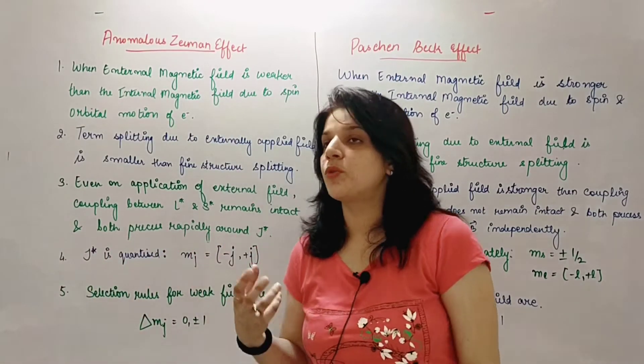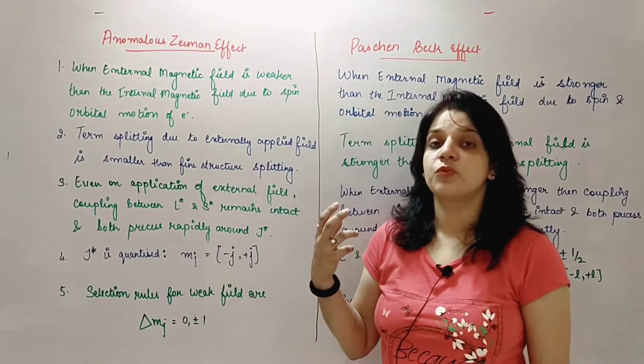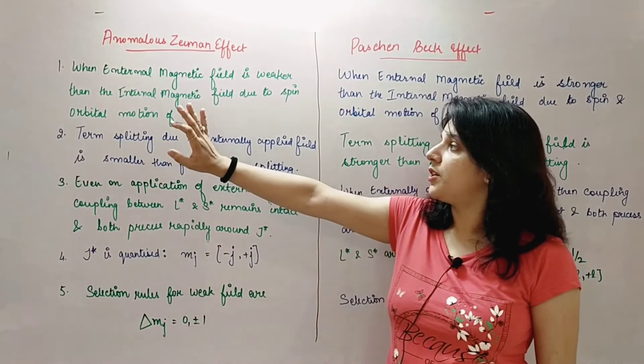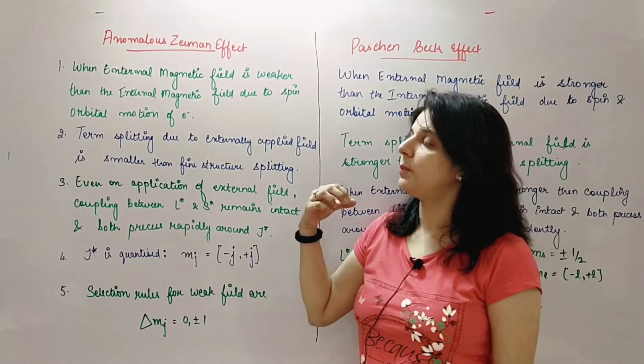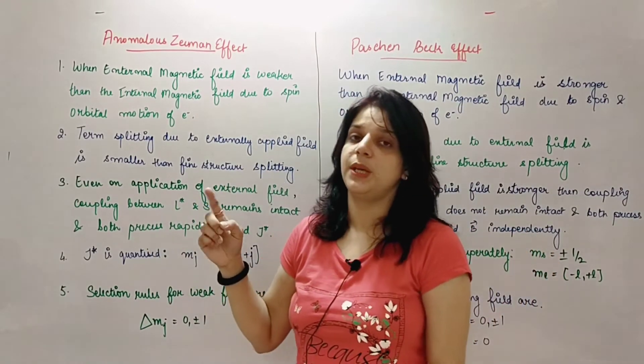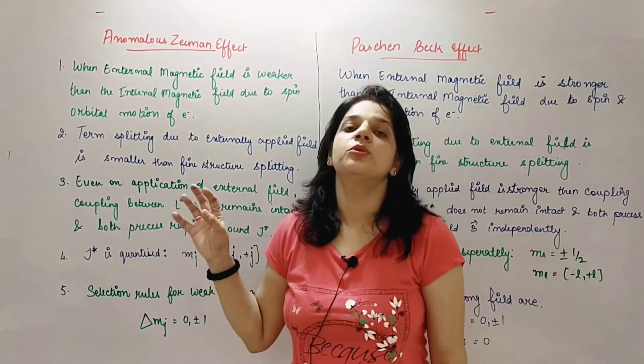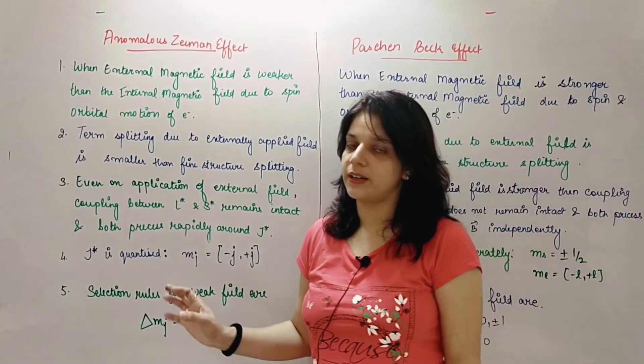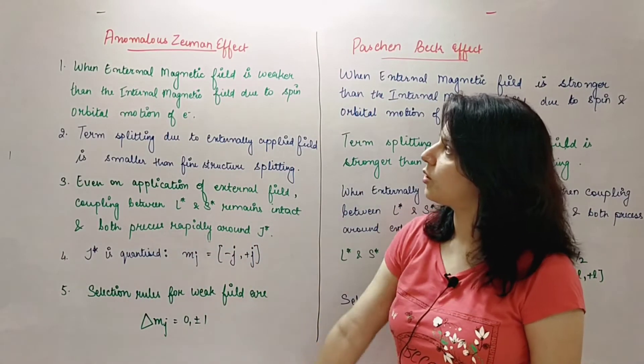Differentiation is done. Now if anyone asks you what is anomalous Zeeman effect, we'll say when externally magnetic field which is weak in nature is applied on a sample, the internal magnetic field due to spin orbital motion - if my external magnetic field is weaker, and we apply this magnetic field over the sample, term splitting will occur but that term splitting will be very very less or smaller than the fine structure splitting. And its impact on LS coupling will not be much, coupling will remain intact. Due to that, my selection rules and my quantization will be in terms of J. So this is my anomalous Zeeman effect.